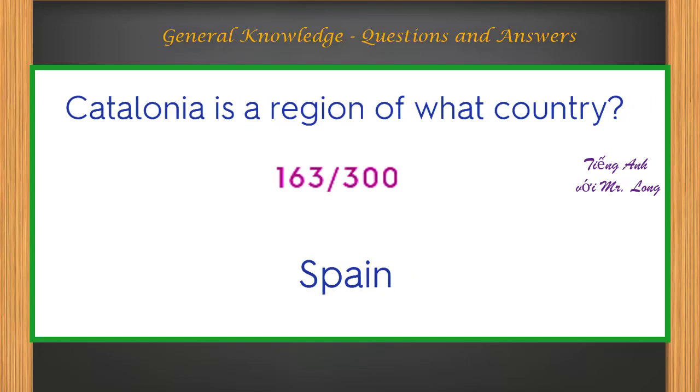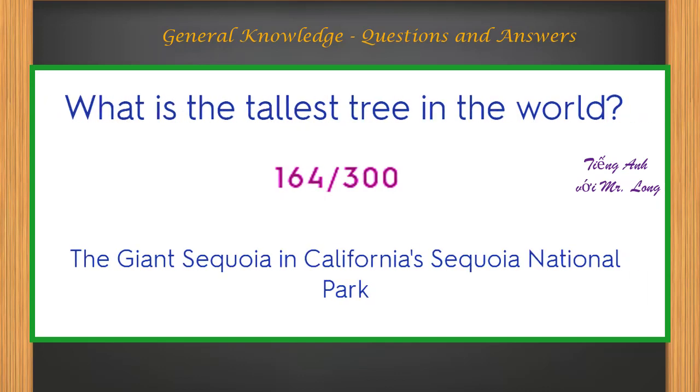Catalonia is a region of what country? Spain. What is the tallest tree in the world? The giant sequoia in California's Sequoia National Park.